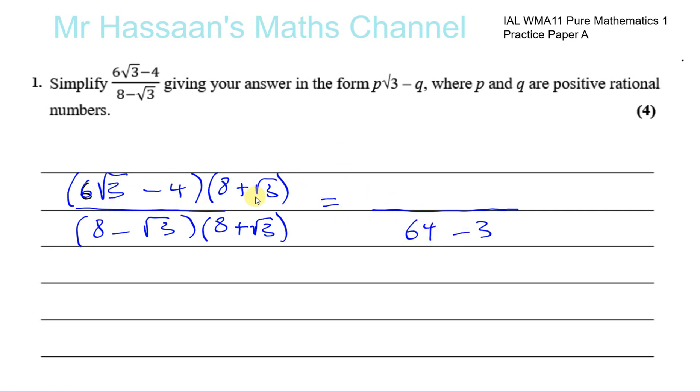Then we have to expand the numerator. So you have 6√3 times 8, 6 times 8 is 48, so that's 48 times √3. And then you have 6√3 times √3. Now 6√3 times √3 is going to give you 6 times 3, so that's plus 6 times 3.